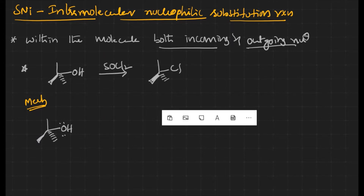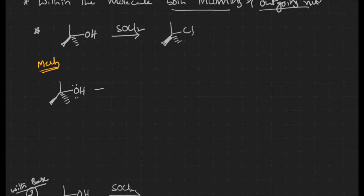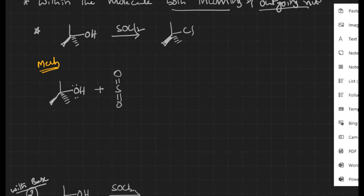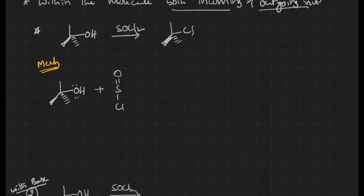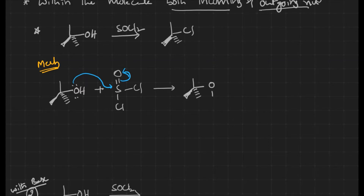Let us see how the reaction mechanism takes place. When the alcohol reacts with SOCl2, the lone pair of oxygen attacks the electrophilic center. Shifting of electrons takes place towards oxygen. After that, oxygen with a positive charge is unstable, because of which elimination of a proton takes place in this step.